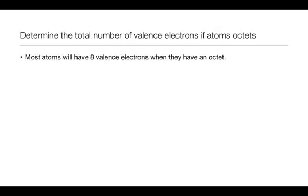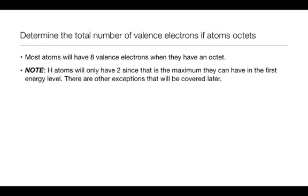Most atoms will have eight valence electrons when they have an octet. There are a few exceptions. Most notably is hydrogen. Hydrogen is only going to have two electrons because that's how many electrons can be held in the first energy level. Once it reaches that two, it's considered to be a full shell, and that's what we mean by an octet.